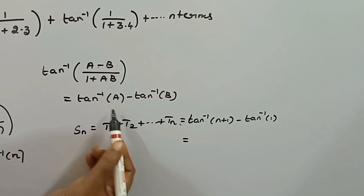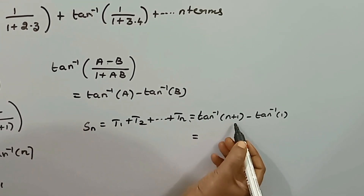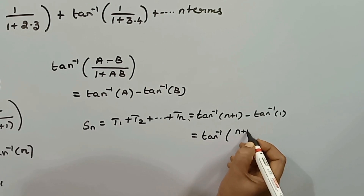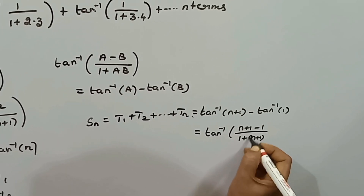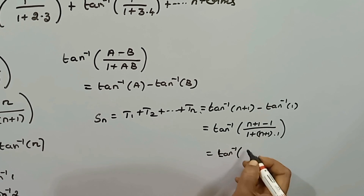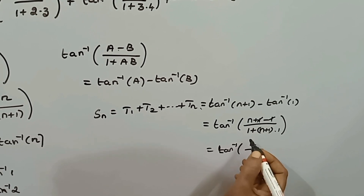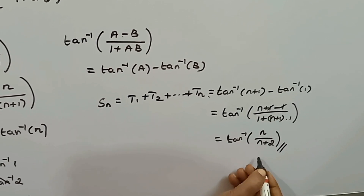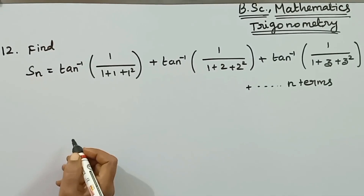Now we apply the formula tan inverse of a minus tan inverse of b equals tan inverse of a minus b divided by 1 plus ab. Here a equals n plus 1 and b equals 1. So the numerator is n plus 1 minus 1 equals n, and the denominator is 1 plus n plus 1 equals n plus 2. Therefore Sn equals tan inverse of n divided by n plus 2.